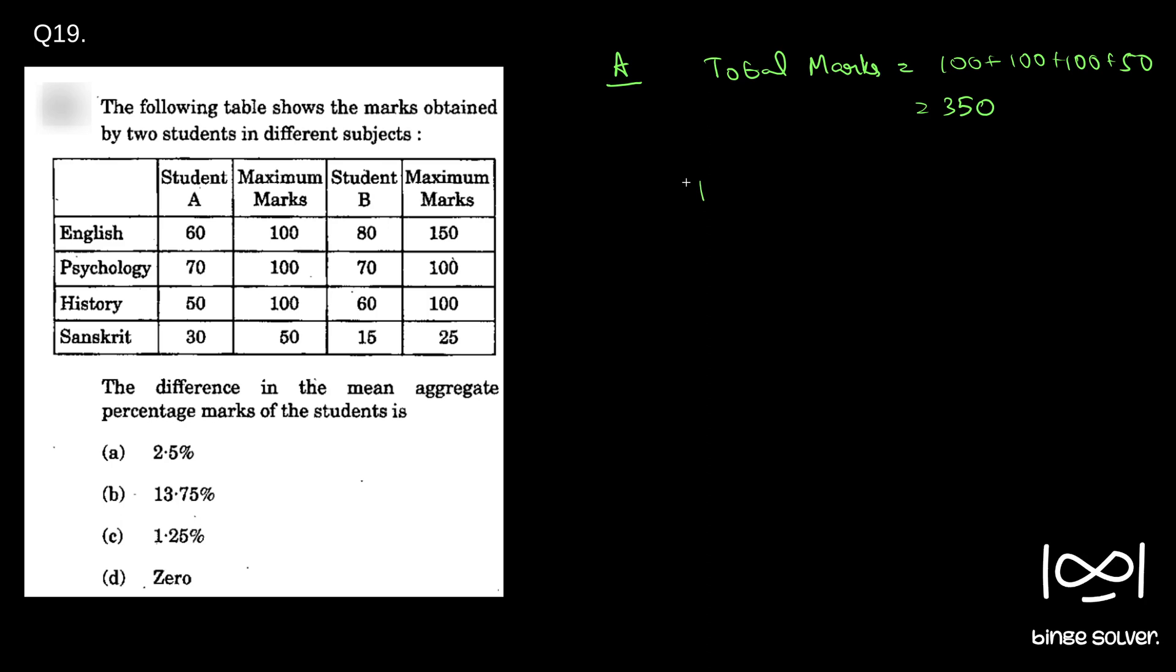So now total marks secured is 60 plus 70 plus 50 plus 30, which is—you see, 7 plus 3 is 10, 15 plus 6 is 21. So 210. So percentage is 210 by 350.